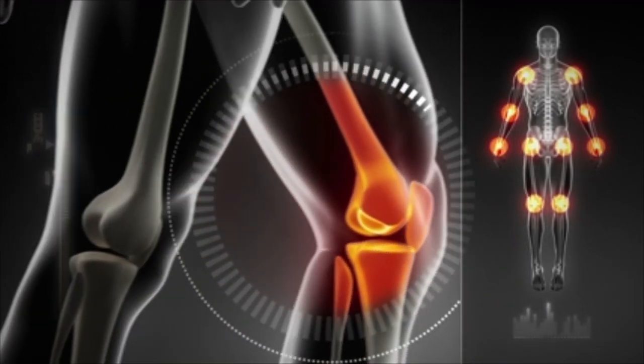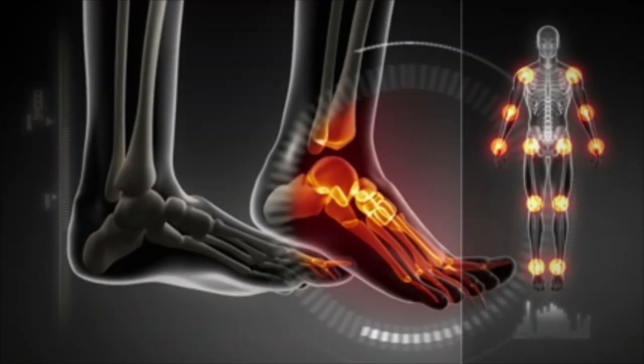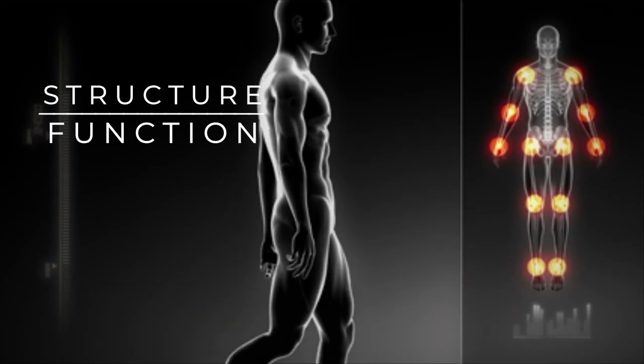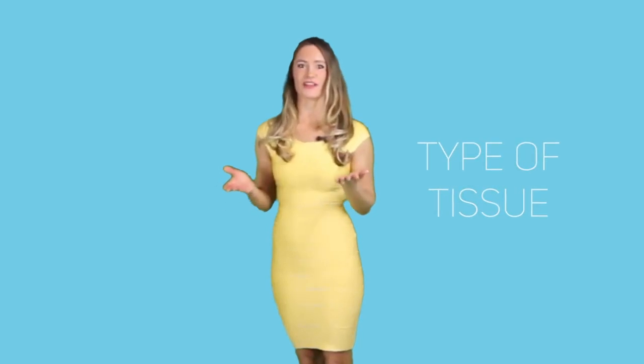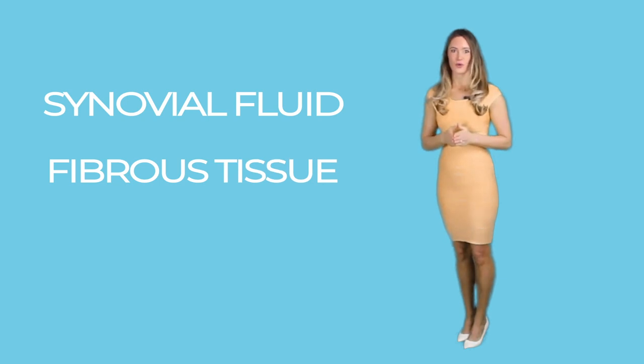Since we have a lot of joints, it's only proper that we classify them according to either structure or their function. When we refer to structure, the focus lies on the type of tissue that seals the connection. The tissue can be synovial fluid, a fibrous tissue, or the most common, cartilage. There are instances when the tissues involved are a combination of the three. As for the function, joints are classified according to the level of movement they allow the bones to make, as well as the number of bones needed to make the movement. Note that structure and function are closely related to each other.